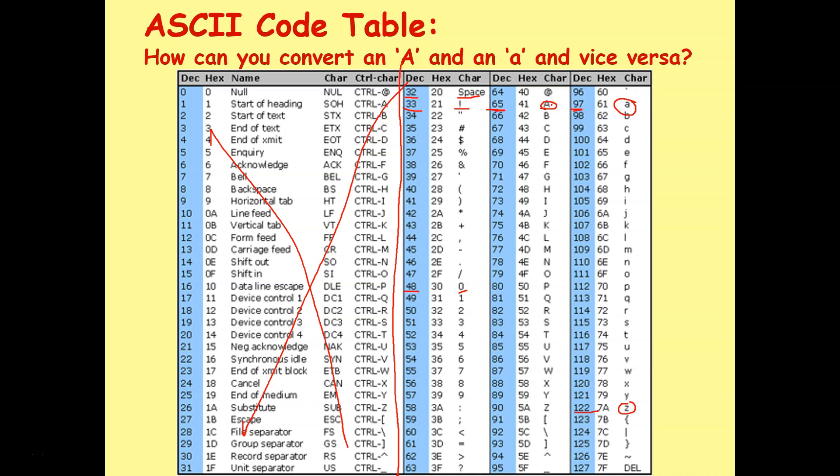So the question here is how do we convert an uppercase a and a lowercase a and vice versa? Well, if I know that capital A is value 65 and I add 32 to that, I get 97, which gives me a lowercase a. Vice versa. If I've got a lowercase a, which I know is a value 97, and I subtract 32, that will give me an uppercase character, which is 65.